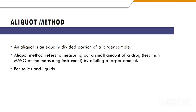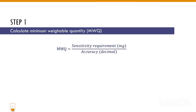This method is used for both solids as well as liquids. The steps used in the Aliquot method: the first step is the calculation of the minimum weighable quantity, which is calculated by dividing the sensitivity requirement of our instrument by the percentage accuracy — the percentage acceptable limit or percentage error — converted into decimal points.